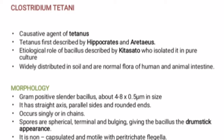Next we are going to discuss the identical features of Clostridium tetani. Clostridium tetani is one of the important pathogens under the genus Clostridium and is the causative agent of the disease known as tetanus. Tetanus is an ancient disease, first described by Hippocrates and Aretaeus, and the etiological role of this bacillus was first described by Kitasato in 1889, who isolated this bacillus in pure culture.